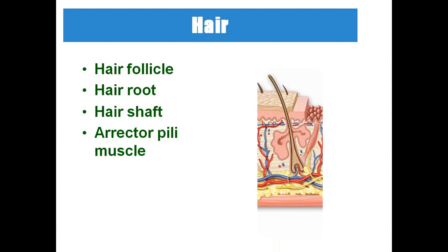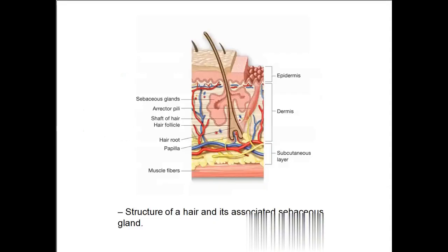The erector pili muscle is present in the skin and makes the hair stand up — we usually call this goosebumps. In the diagram, you can see: hair follicle, hair shaft, hair root, and the erector pili muscle. Its contraction causes hair to stand up. You can also see hair papillae, hair bulb, hair follicle, and hair bulge.